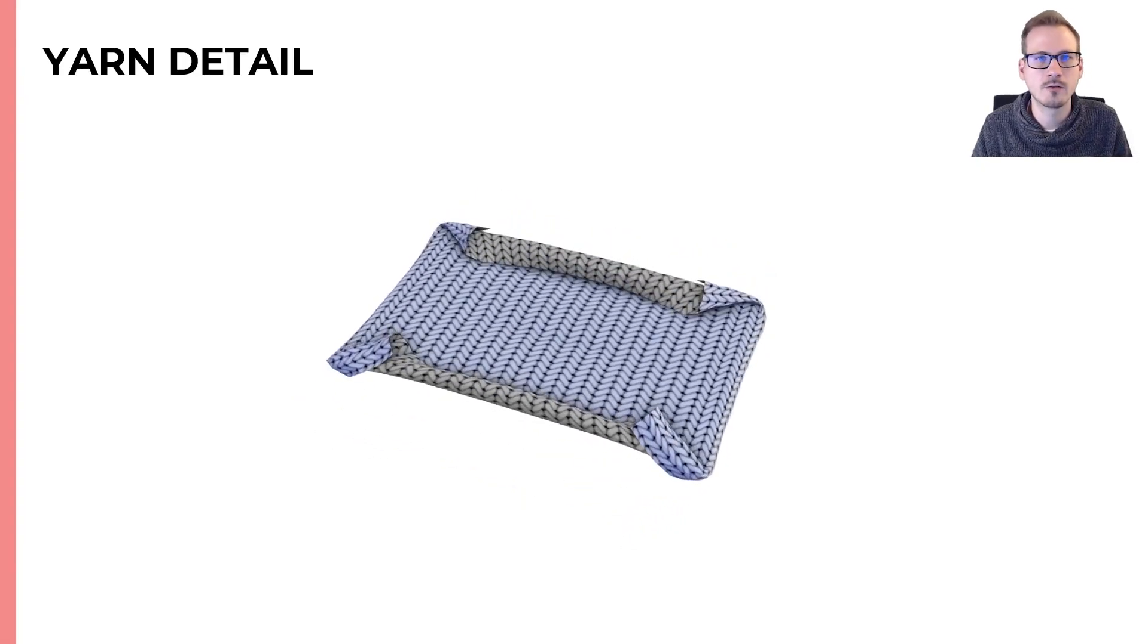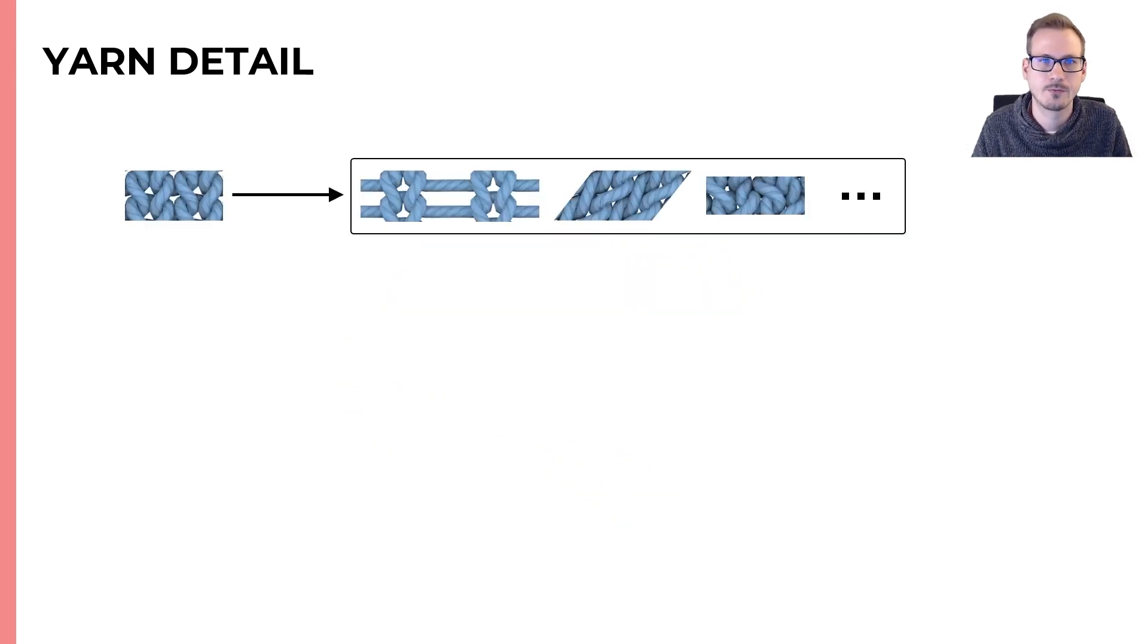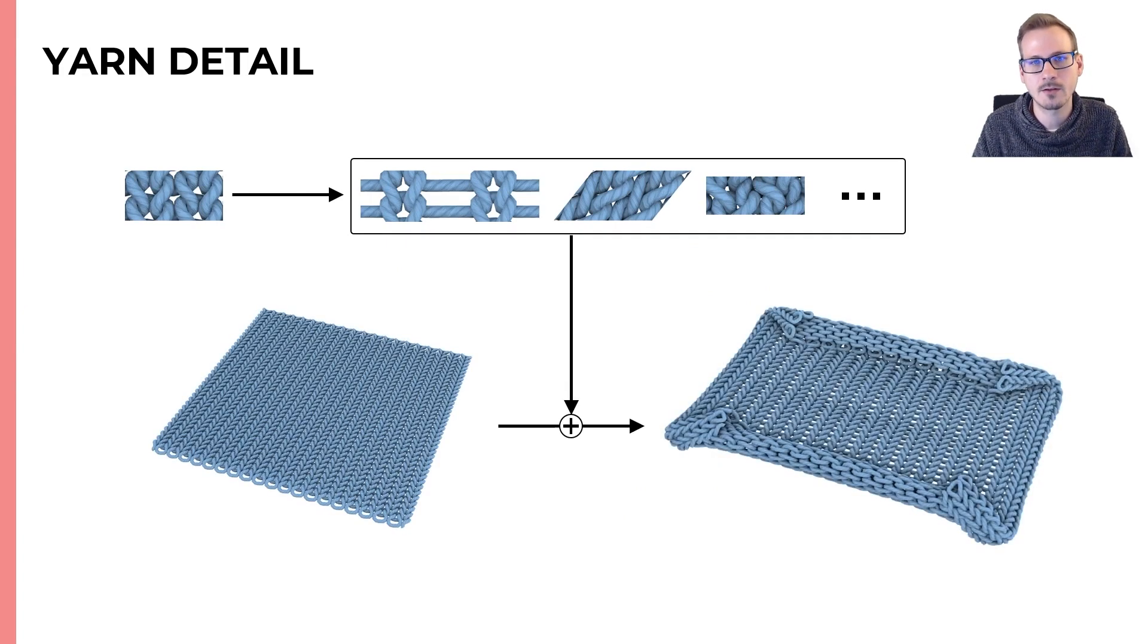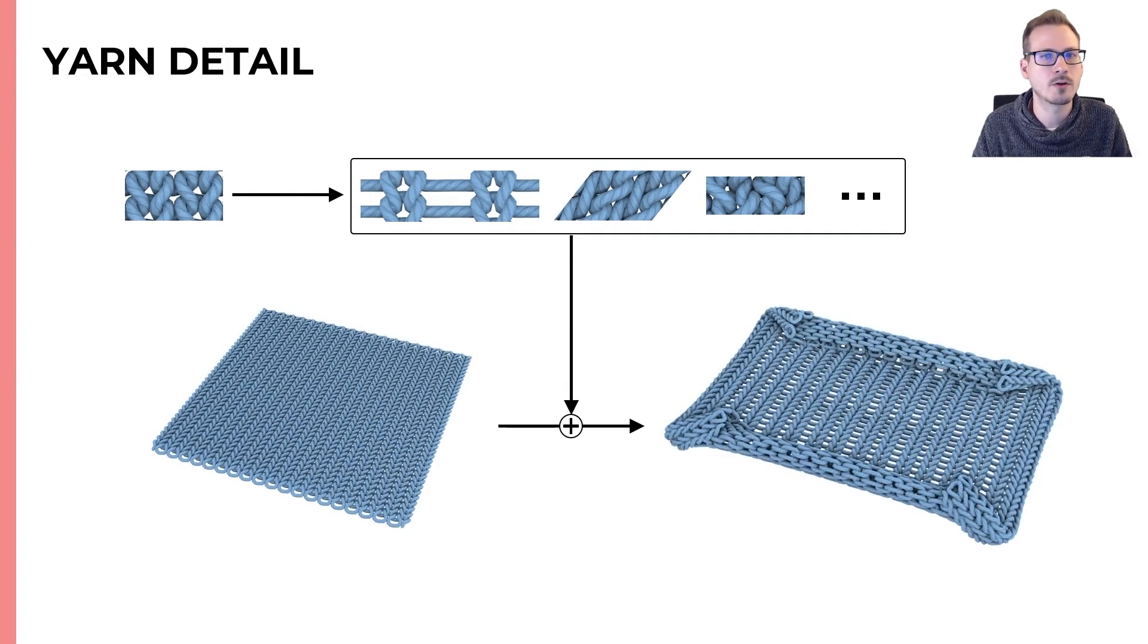While we match the overall elasticity of the fabric, the examples lack some of the beautiful yarn detail. To solve this, we pre-compute displacements from our periodic simulations, and we then interpolate them based on the mesh deformation, which adds important features such as yarns tightening under tension.